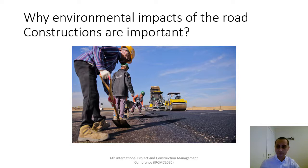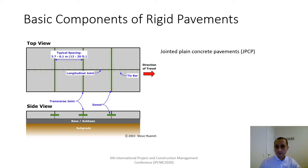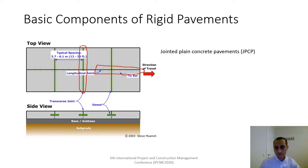Differently from asphalt pavements, rigid pavements are constructed with joints and steel reinforcements used in the joints. We designed jointed plain concrete pavements. You can see the basic components of a jointed plain concrete pavement. There are longitudinal joints and we use tie bars in these joints. Tie bars and dowel bars are steel reinforcements used in rigid pavements.